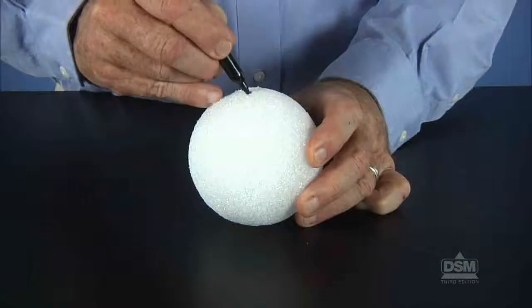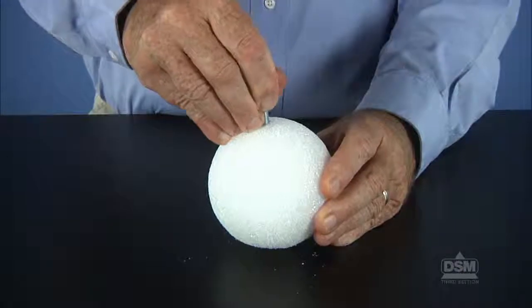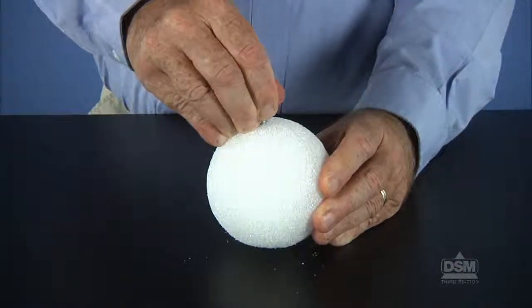Next, prepare the Earth model. To represent the geographic north and south poles of the Earth, use the marker to put two spots directly opposite one another on the foam ball. For the Earth's axis, push the metal bolt almost halfway into the ball at the geographic south pole.